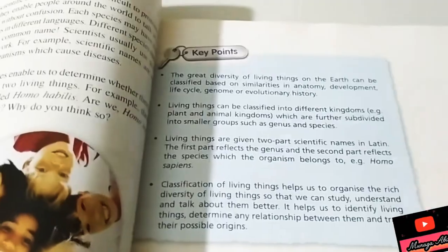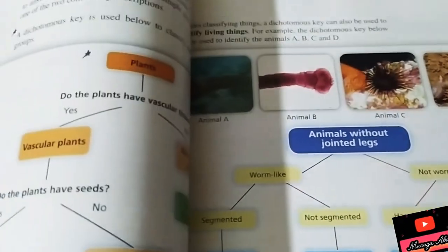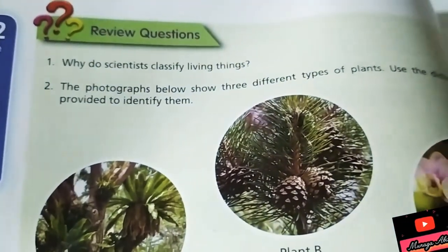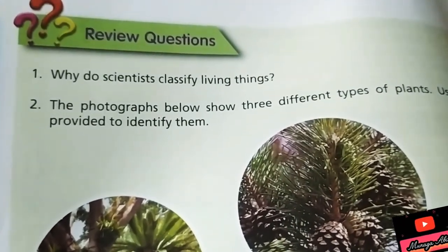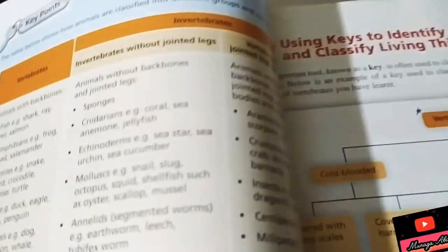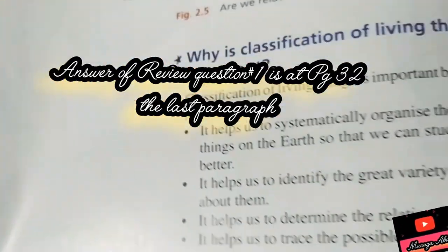At the end of the chapter there are review questions. Today we will do only question one: 'Why do scientists classify living things?' The answer is on page 32 — the four bullet points we just discussed.